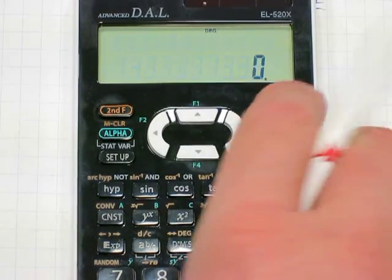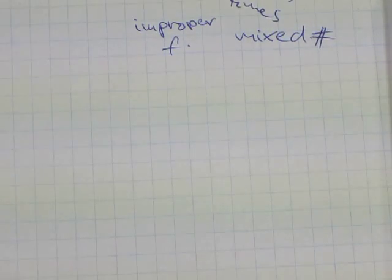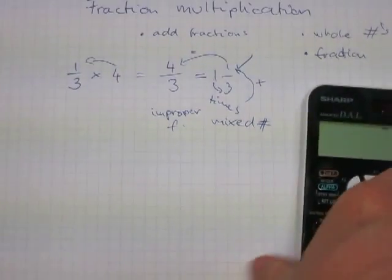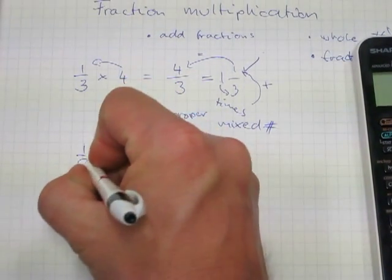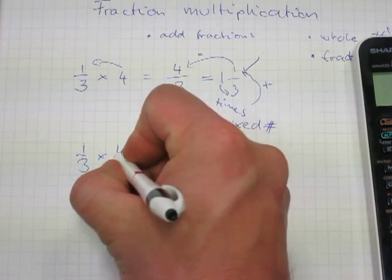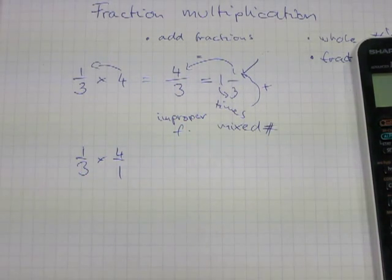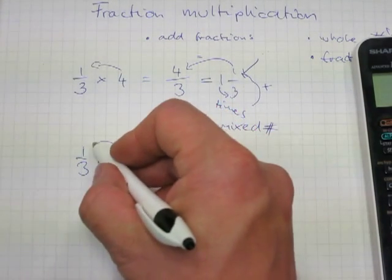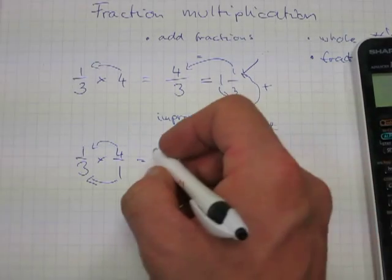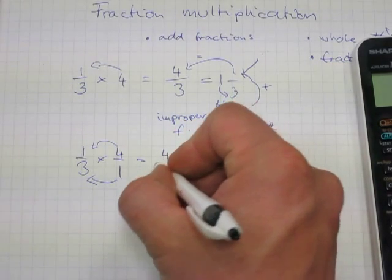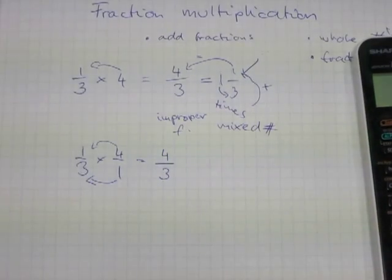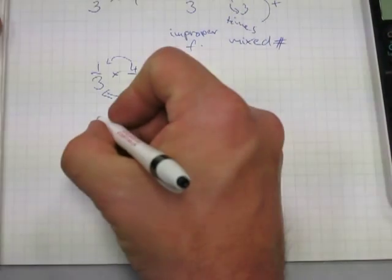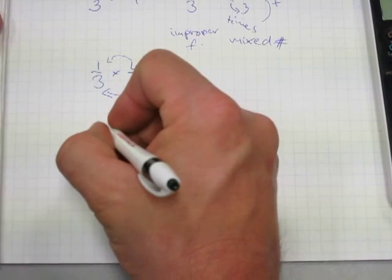Another approach for fraction multiplication: you can write one-third times four-over-one, because four is the same as four over one. Then you multiply top with top and bottom with bottom, which gives you four over three — the same result.